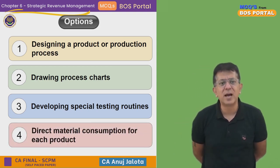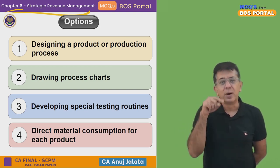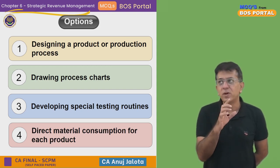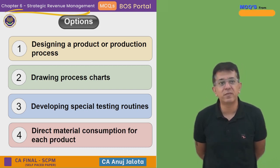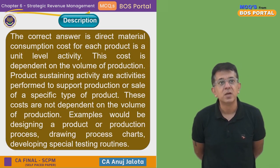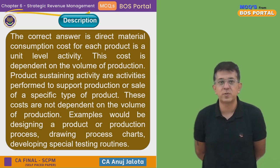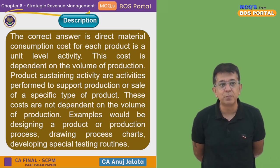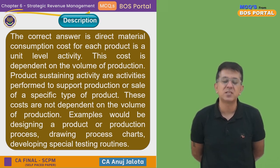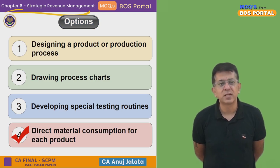Option four: direct material consumption for each product. This is NOT a product sustaining activity — it is incurred each time a product is made. If you produce 10 units, this cost is incurred 10 times. The above three costs are only incurred once over the entire lifetime of the product. So the answer should be option four. The institute's explanation confirms: direct material consumption is a unit level activity, dependent upon production volume. Product sustaining activities — designing, drawing process charts, developing testing routines — are not volume-dependent.